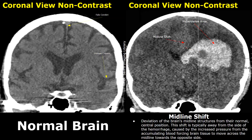Because the hemorrhage is large, mass effect has occurred and caused a midline shift. Midline shift is the deviation of the brain's midline structures from their normal central position. Due to the hemorrhage, the ventricles have shifted to the opposite side — a slight deviation from their normal location. It is caused by increased pressure from the accumulating blood forcing brain tissue across the midline. The midline shift also carries very poor prognosis.